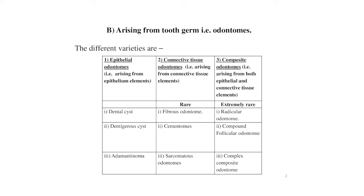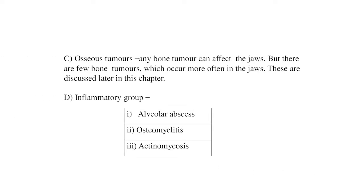Connective tissue odontomes arise from connective tissue elements: fibrous odontome, cementomes, sarcomatous odontomes — these are rare. Third is composite odontome, arising from both epithelial and connective tissue elements, which are extremely rare: radicular odontome, compound follicular odontome, and complex composite odontome.